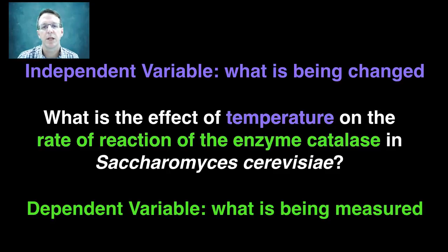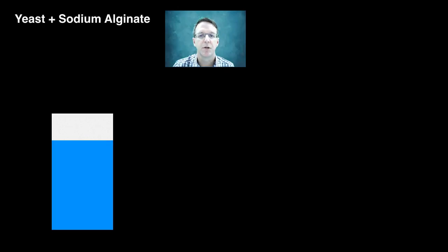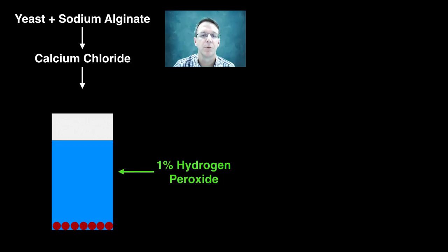We can set the experiment up by mixing yeast with sodium alginate, and then putting that dropwise into a solution of calcium chloride. This results in the formation of little spheres that encapsulate the yeast, and when these spheres are then placed into a solution of hydrogen peroxide, they sink to the bottom.